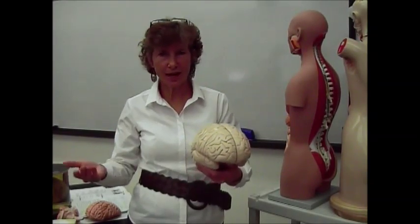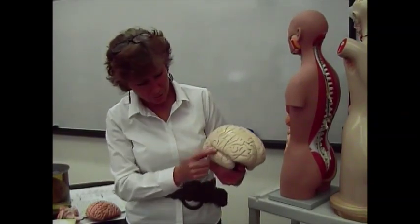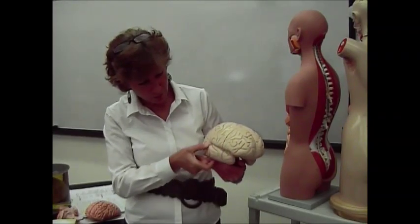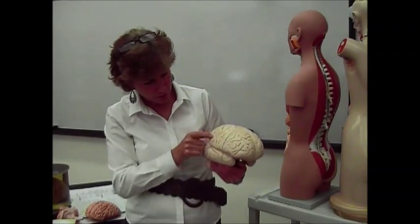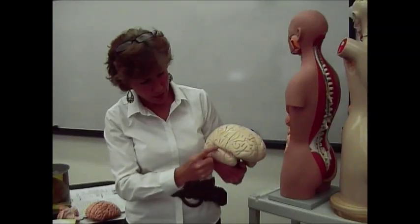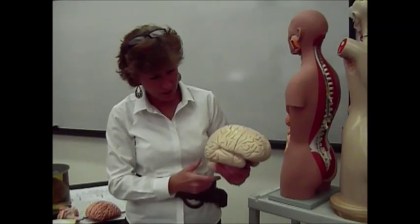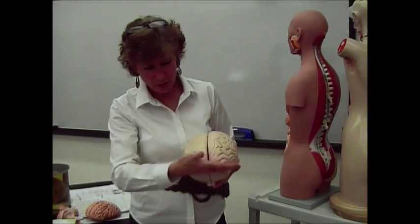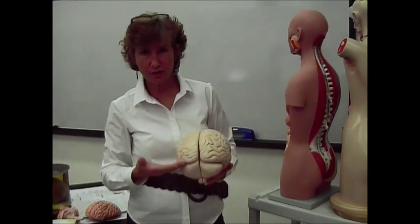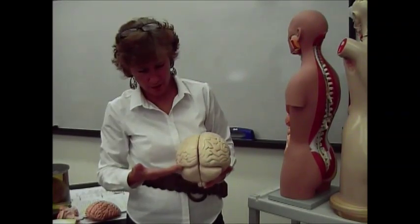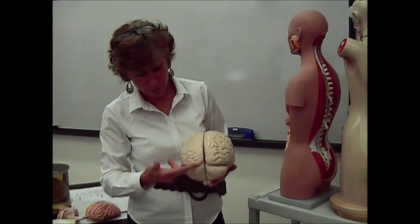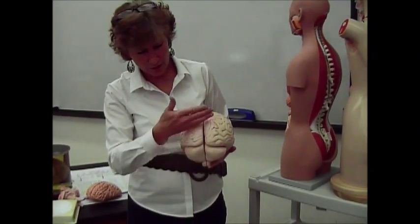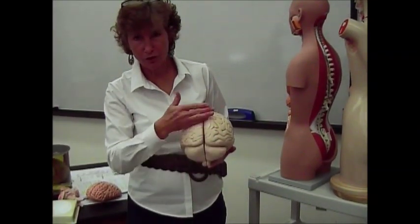Lateral — to the side — you have a lateral fissure, which separates your temporal lobe from your frontal and parietal lobes. Then, moving around to the back of the brain, you've got the transverse fissure, which separates your cerebellum from the occipital lobe of your cerebrum.